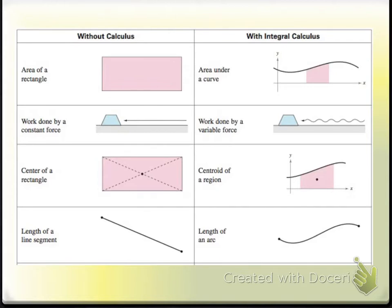Without calculus, you can find the center of a rectangle. With calculus — this is calc 2 — you can find the center of any kind of region, a balancing point. In pre-calculus, you can find the length of a line segment using the distance formula. In calculus — calc 2 — you can find the length of an arc, a curved shape instead of a linear shape.